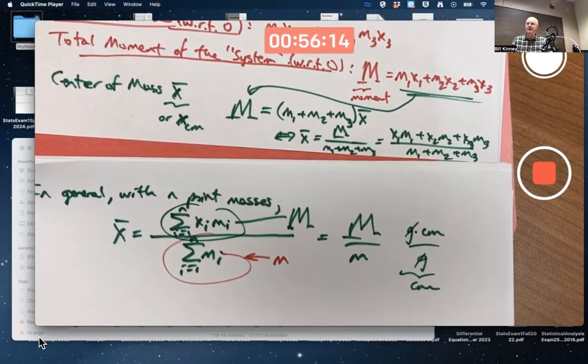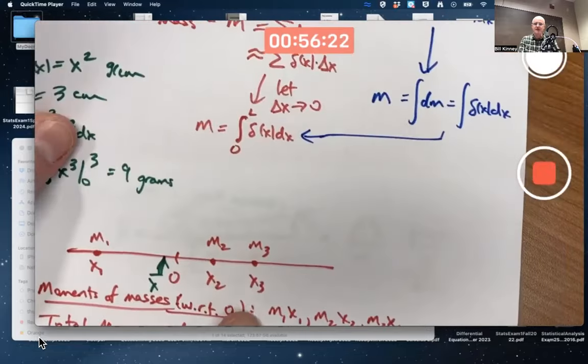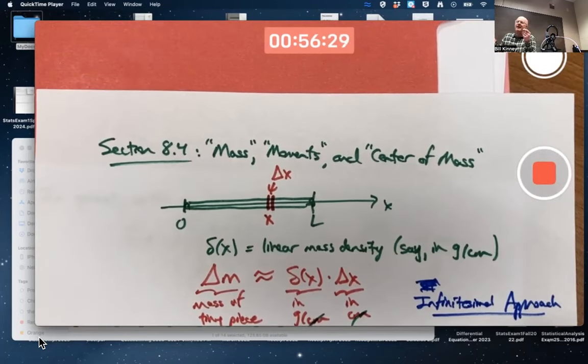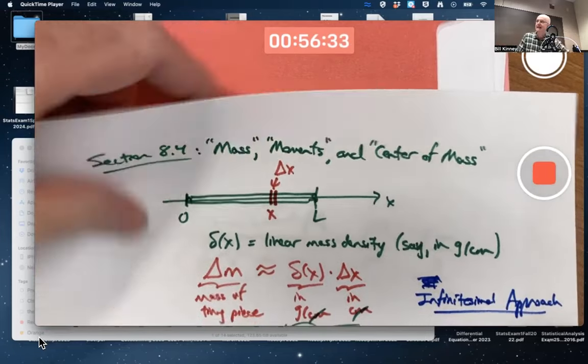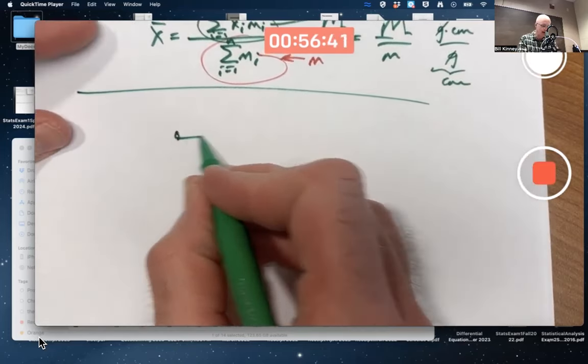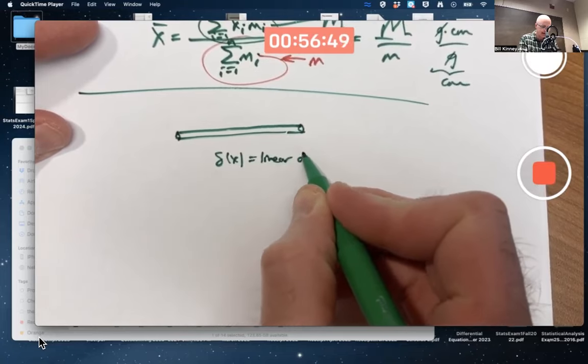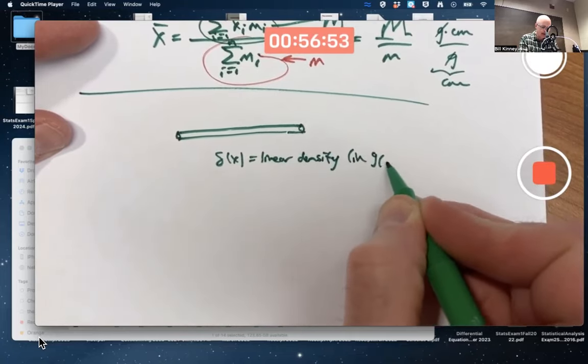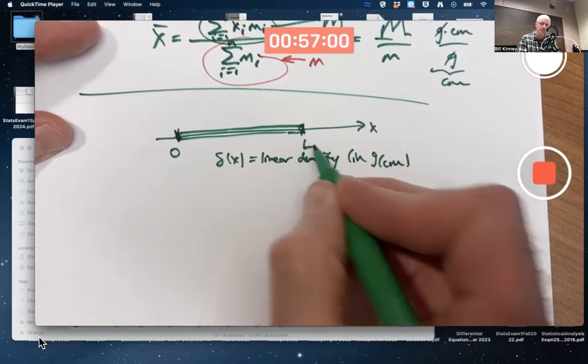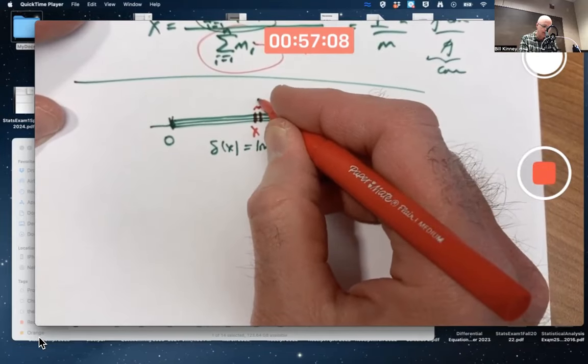What do we want to do now? We want to generalize this to not just systems of finitely many point masses, but to thin rods and maybe thin plates of metal or three-dimensional objects. Can we do it? Let's see how far we can get. What's the center of mass of my thin rod with linear density δ(x)? We can still put an x-axis in here, this can still be zero, this can still be L. This can still be an arbitrary location x and a small chunk of width Δx.